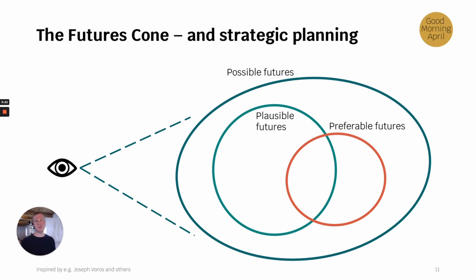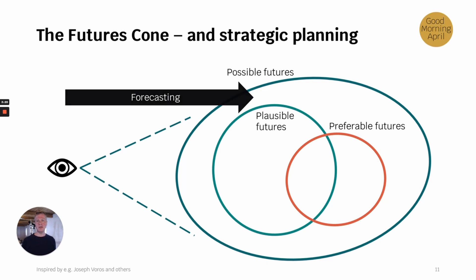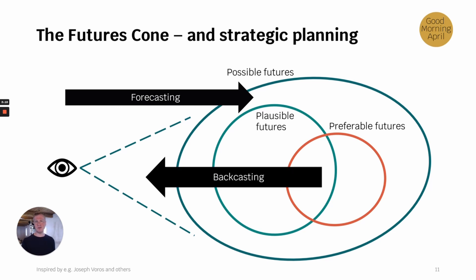Normally in strategic work we forecast what is going to happen — we use our budgeting and planning to do that. But in futures thinking we calculate backwards from the preferable futures. That's called backcasting. I'll come back to that.